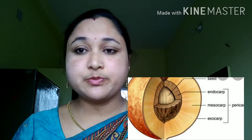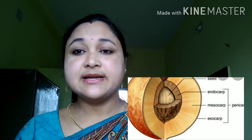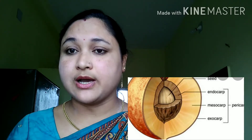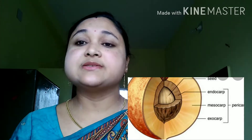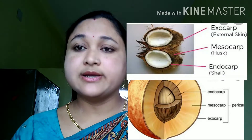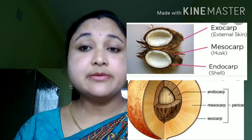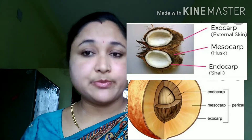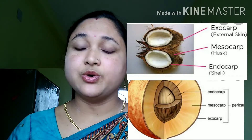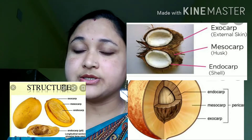The epicarp is also the fruit peel. The next is the middle layer, known as the mesocarp, which is mostly juicy, pulpy, and fleshy. In the exceptional case of coconut, the mesocarp is fibrous in nature, whereas in mango it is pulpy.